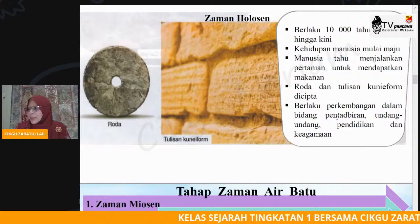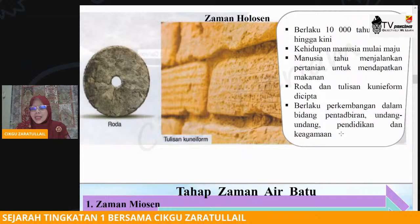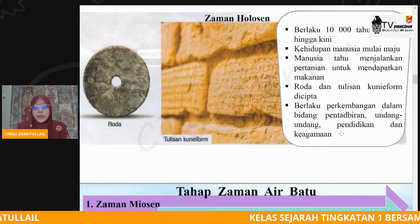Seterusnya berlaku perkembangan dalam bidang pentadbiran, undang-undang, pendidikan dan juga keagamaan. Maksudnya pada zaman Holosen ini, zaman yang keempat ini, mereka sudah pandai menyusun atur — siapa jadi ketua, macam mana nak susun.